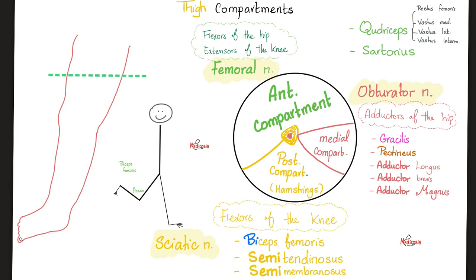Now let's leave the gluteal region and talk about the thigh. You have three compartments: the anterior compartment, the posterior compartment, and the medial compartment. The femoral nerve supplies the anterior compartment, the obturator nerve supplies the medial compartment, and the sciatic nerve supplies the posterior compartment.